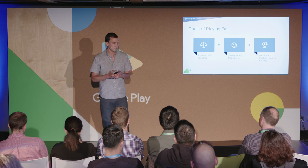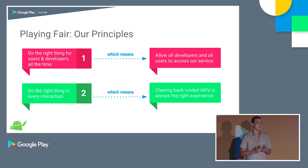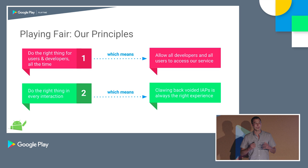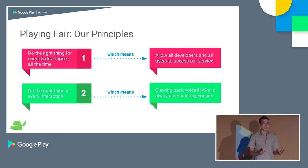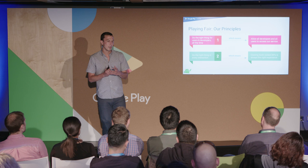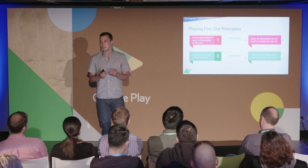Let me talk about our principles to help us achieve these goals. The first is that we want to do the right thing for all users all the time. It starts with assuming that all users and all developers are inherently good — and we really believe that. When they're inherently good, we can provide them access to all of our services. But we know from experience that not all users are good; there's a very small minority that aren't. So we have to evaluate everything on a case-by-case, or an interaction-by-interaction, basis.